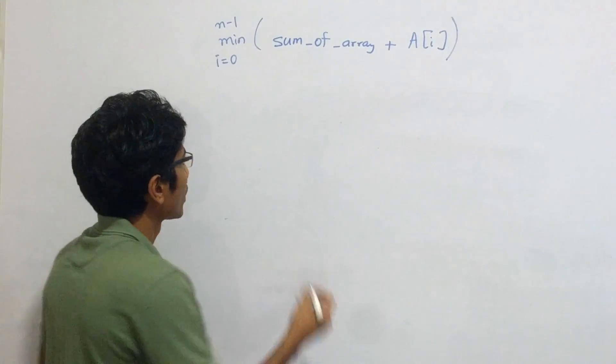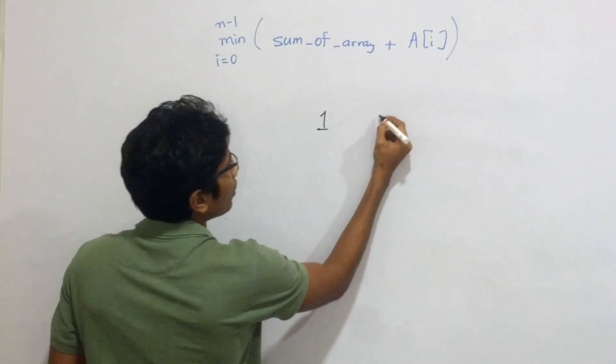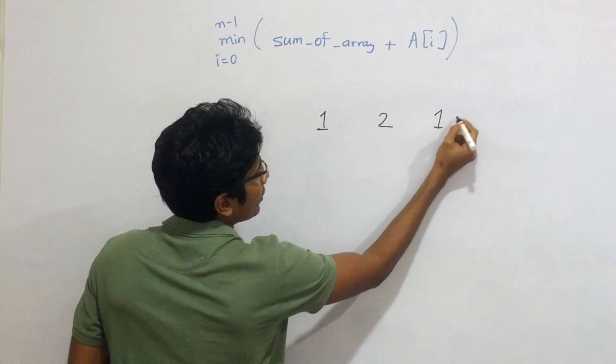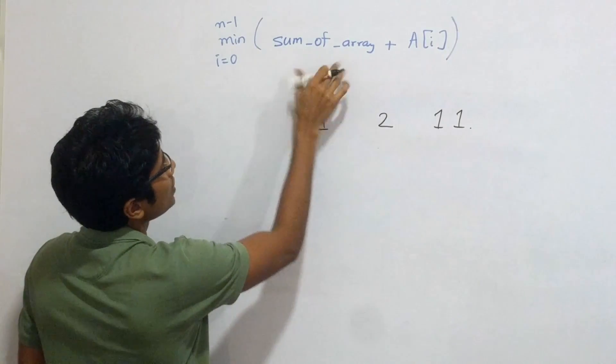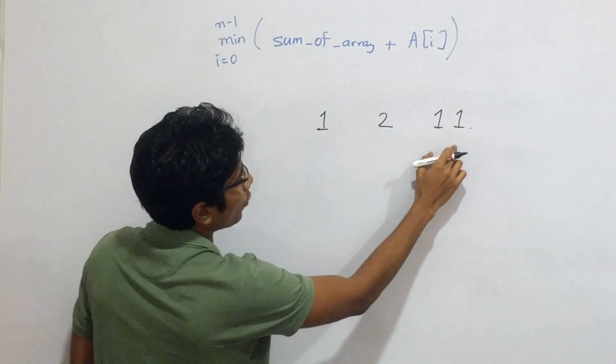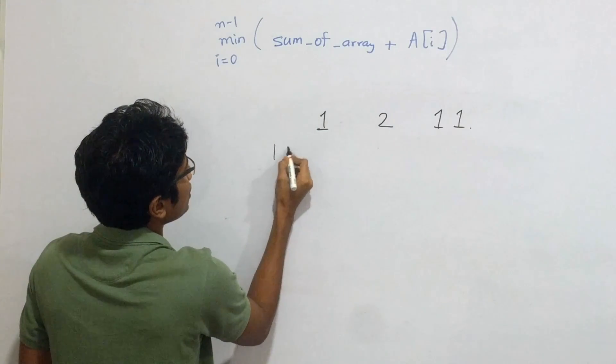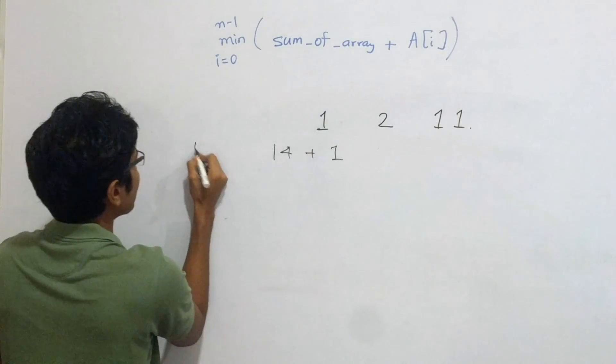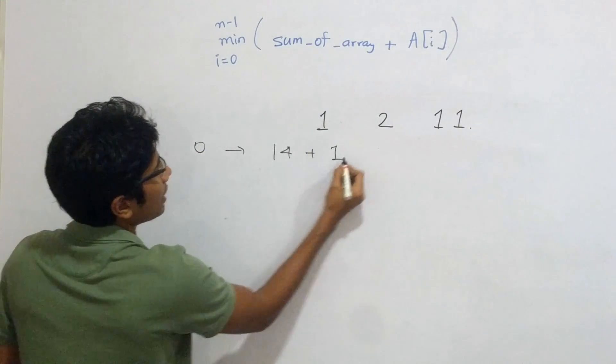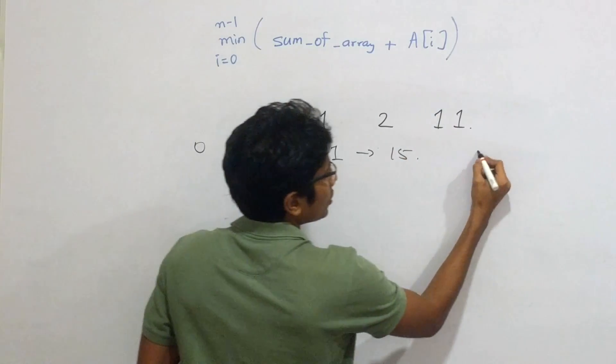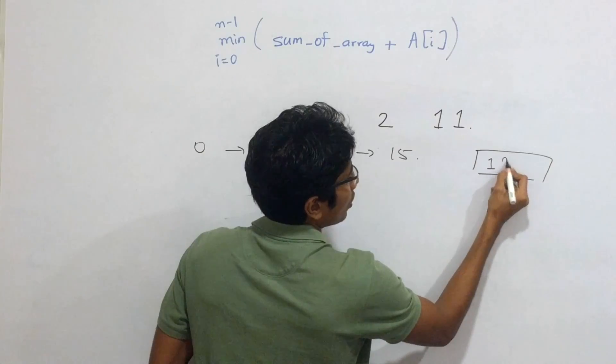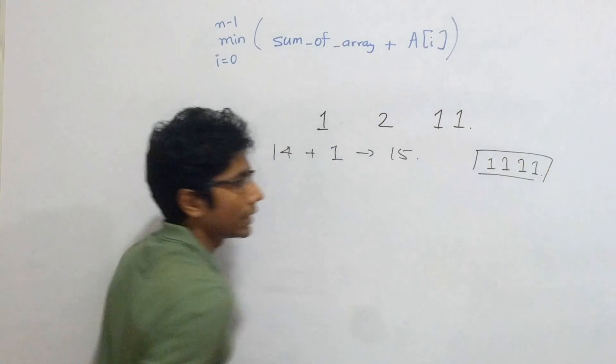So let's take an example. Let's take 1, 2, and 11. So at index 0, you see that sum of array is in total 14. So 14 plus 1 is what you have at index 0. And this comes out to be 15. We are assuming that there is a 4-bit integer. So this value does not exceed the integer limit.